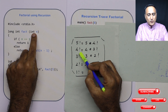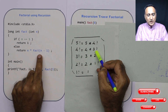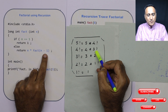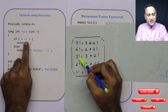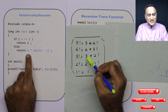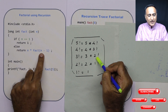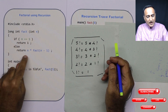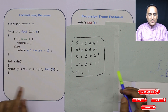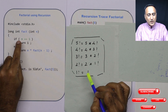Next time, 4 factorial is 4 into 3 factorial, because 4 minus 1 is 3. When n is 3, since 3 is not equal to 1, it is 3 into 2 factorial, because 3 minus 1 is 2. So this particular recursion keeps happening till I reach the value of n equal to 1.